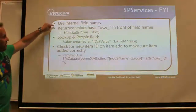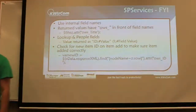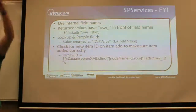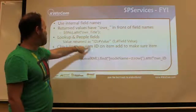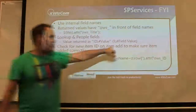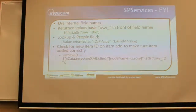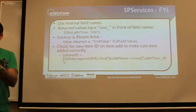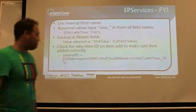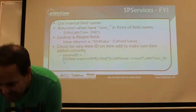Use internal field names — return values have OWS appended to the front. If you've ever used the SharePoint web service, you know this, because when it comes back you get this XML document with OWS in front of everything. Lookup and people fields are returned that way. When you create a new item, check for a new item ID. When you update an item, check for the item ID — if the item ID is null, something's gone wrong. That's your first indication to check for errors.